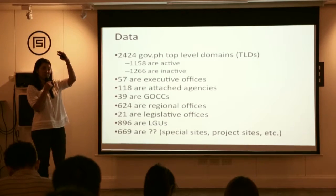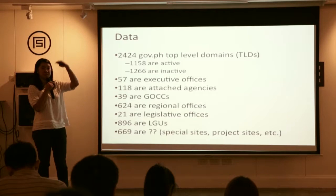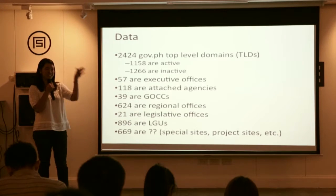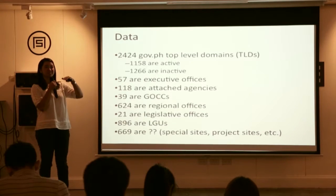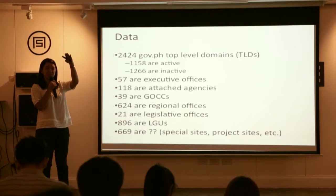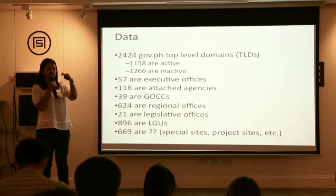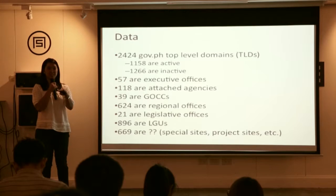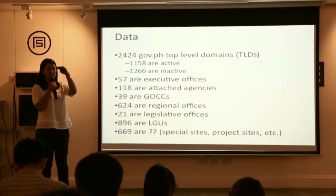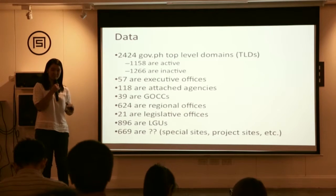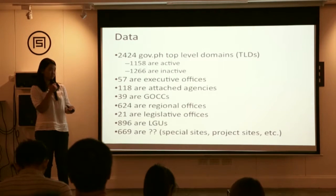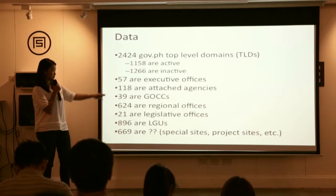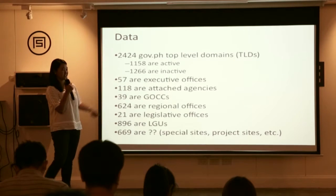The hierarchy is: the Office of the President, then executive departments, then attached agencies, then regional offices. DILG handles local government. That's the structure of the government. So supposedly only those at the top should be top-level domains.